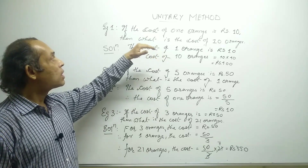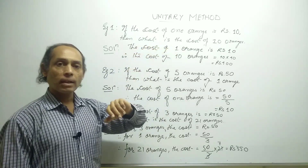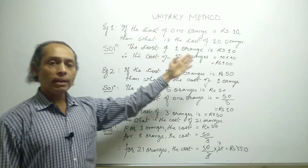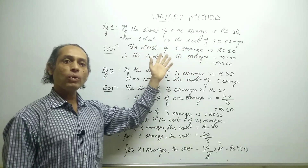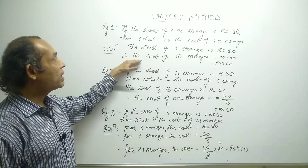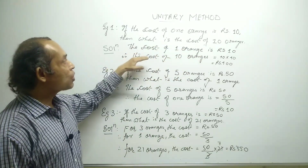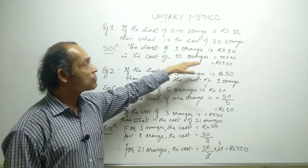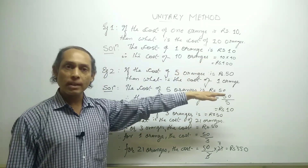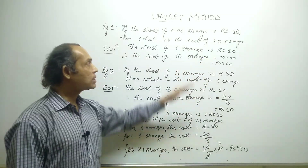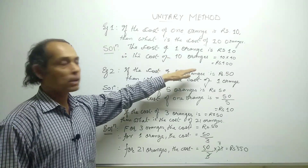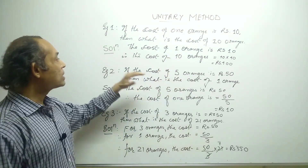In the first case, the cost of one orange is rupees 10. When going from one to many, we multiply. So the cost of 10 oranges will be rupees 10 into 10, which equals rupees 100. That is the answer for this example.